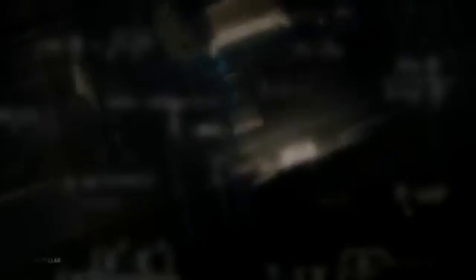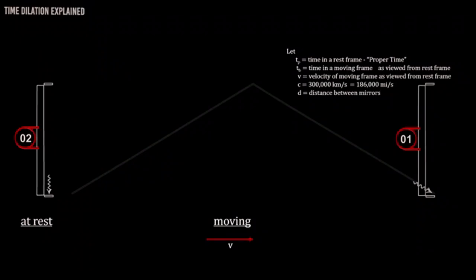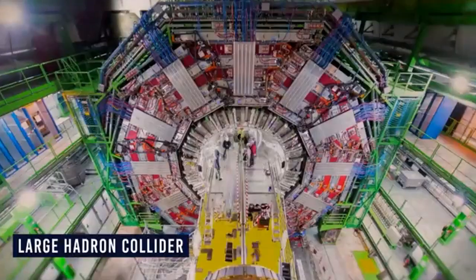General relativity also predicted gravitational waves, ripples in spacetime generated by massive accelerating objects like merging black holes or neutron stars. In 2015, the Laser Interferometer Gravitational Wave Observatory made the first direct detection of gravitational waves, confirming yet another aspect of Einstein's theory.